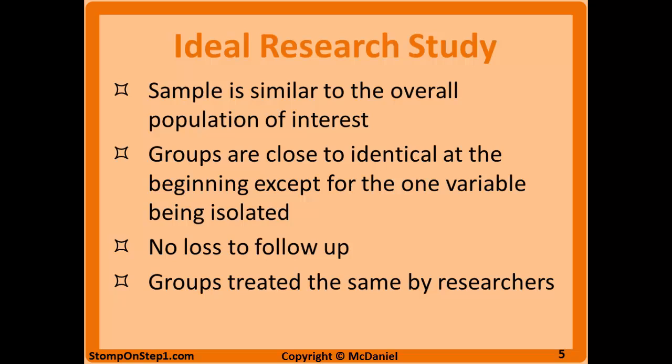Additionally, you want the different groups to be treated the same by the researchers. It doesn't matter how similar the groups are at the beginning if, over the course of the study, one group is treated completely differently — this might be the number of clinic visits each group has or how much time they spend with the attendings. Those differences can add a lot of bias if they're not similar between both groups. Finally, you want all patients to be compliant. If your placebo group is going out and getting treatment elsewhere, or your treatment group isn't actually taking the treatment, you're making the two groups more and more similar, which creates issues when you try to compare them based on what they were assigned to, since they didn't actually follow that assignment.